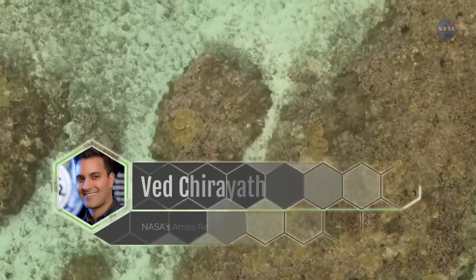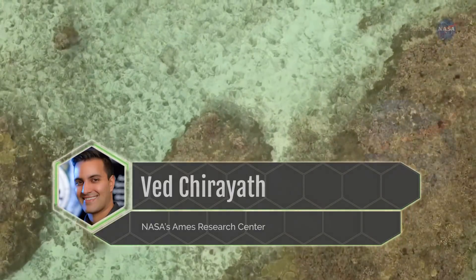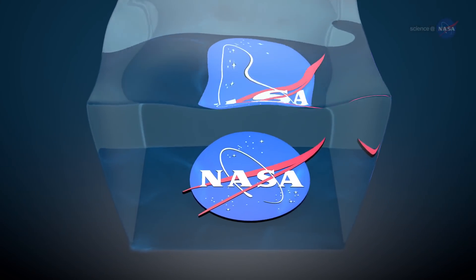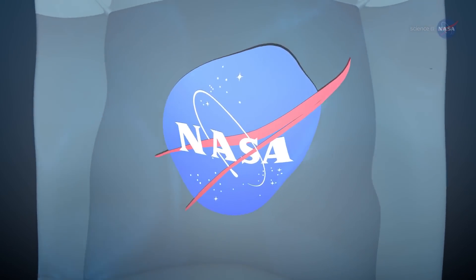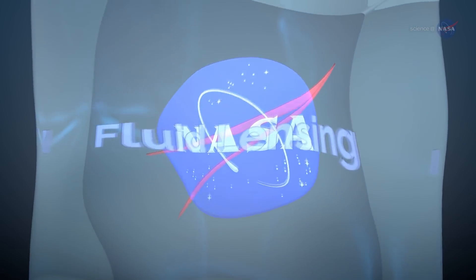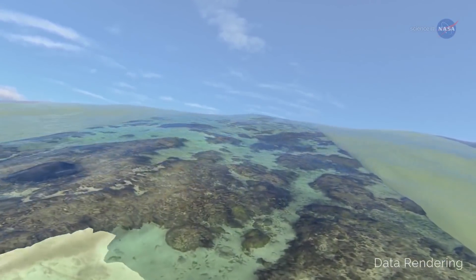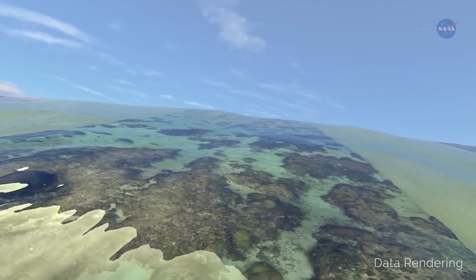Ved Chariath, a scientist at NASA's Ames Research Center, says images of objects under the surface are distorted in several ways, making it difficult to gather reliable data about them. Chariath has a technology solution called fluid lensing. He says refraction of light by waves distorts the appearance of undersea objects in a number of ways.